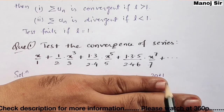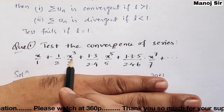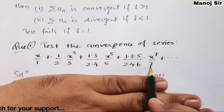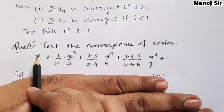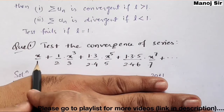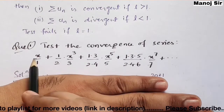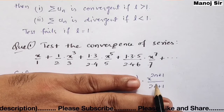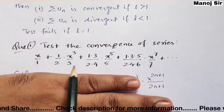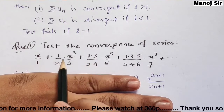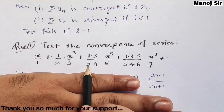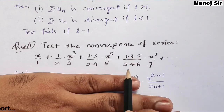Looking at the series, the powers of x are 1, 3, 5, 7 — always odd numbers — and the standalone denominators 1, 3, 5, 7 are also odd. So we can write x to the power (2n+1) upon (2n+1). Apart from this, the coefficients in the numerator consist of odd numbers: 1, then 1·3, then 1·3·5, and in the denominator even numbers: 2, then 2·4, then 2·4·6.